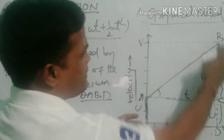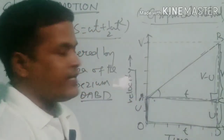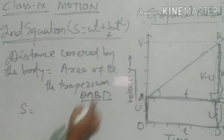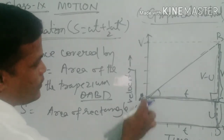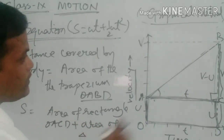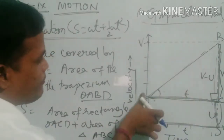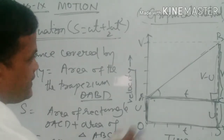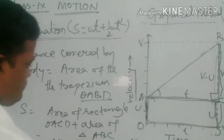The area of this trapezium OABD can be split into two parts: the area of rectangle OACD plus the area of triangle ABC. So S = area of rectangle OACD + area of triangle ABC. Substituting values: OA × AC + ½ × AC × BC. That gives us OA × AC + ½ × AC × BC.